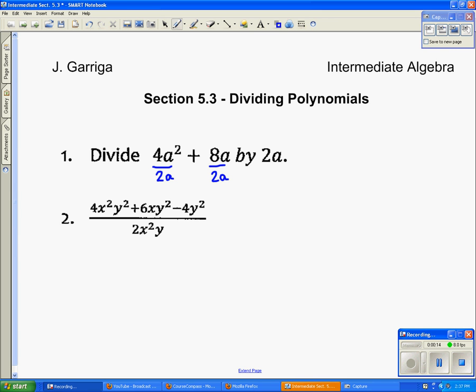So now we just do 4 divided by 2 is 2. And when you divide like bases, you subtract. There's a known 1 there, so 2 minus 1 is just 1. And then I get 8 divided by 2 is 4, and these a's cancel each other out. So that's simply that.